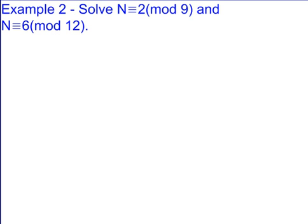Okay, a couple more examples. Solve n equals 2 mod 9 and n equals 6 mod 12. So, you know, we're trying to find two different congruences for this. So you're going to get 2 plus 9a equals 6 plus 12b.